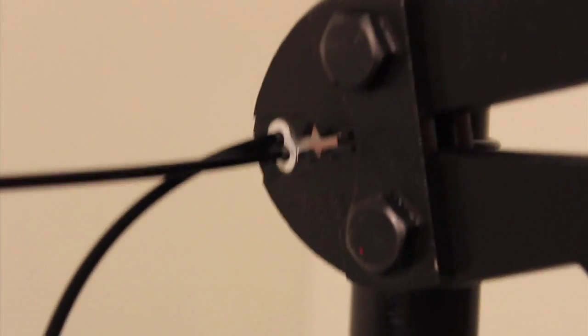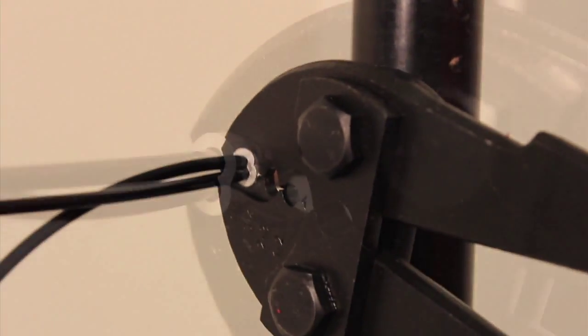Once the connection sleeve is attached with the monofilament correctly around the post, you may then use the crimping tool to pinch the connection sleeve.